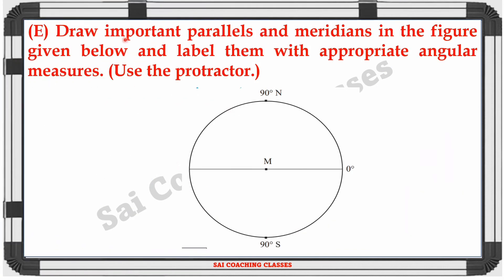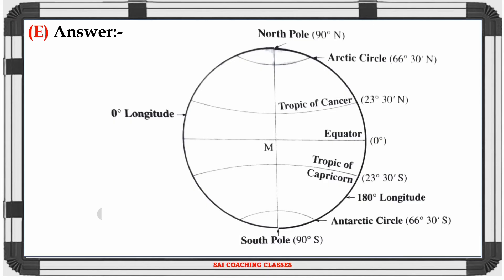Question E: Draw important parallels and meridians in the figure given below and label them with appropriate angular measures. Use the protractor to draw the parallels and meridians. Use the protractor to draw a good figure, then label it clearly.